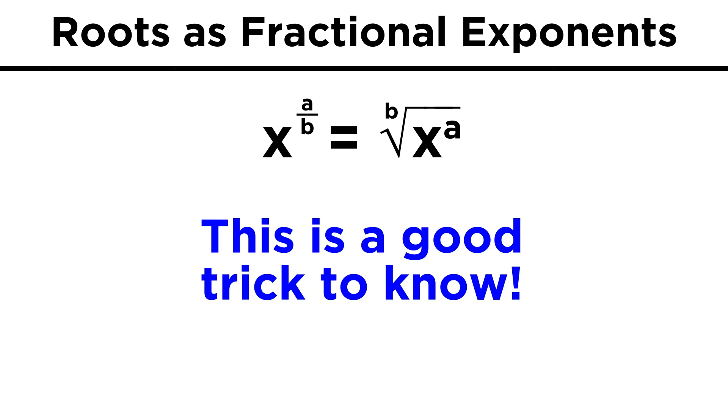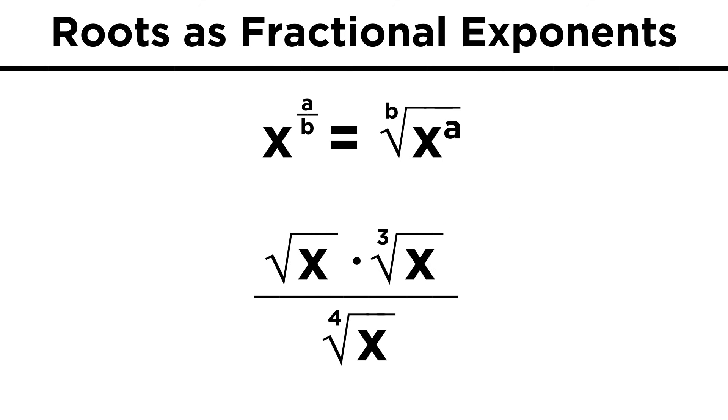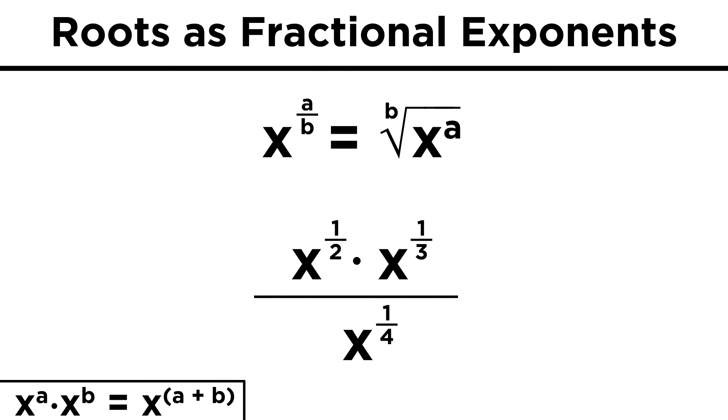When we combine this with what we know about operations with terms raised to exponents, we can do seemingly tricky things. Take this expression here, the square root of x times the cube root of x divided by the fourth root of x. First, let's change this to x to the one-half times x to the one-third divided by x to the one-fourth. Since x to the a times x to the b equals x to the a plus b, we simply add these exponents together on the top. To do so, we need a common denominator for these fractions, so we change them to three-sixths and two-sixths, and add them together to get five-sixths. Then if dividing by the x to the one-fourth, we subtract.